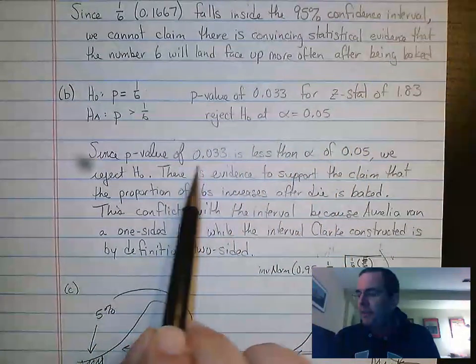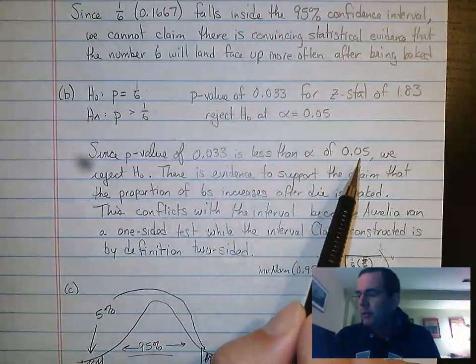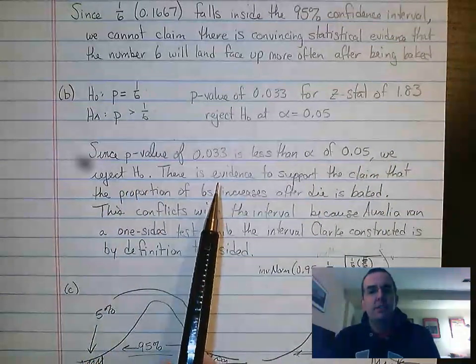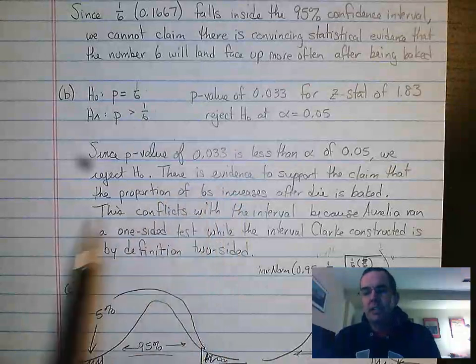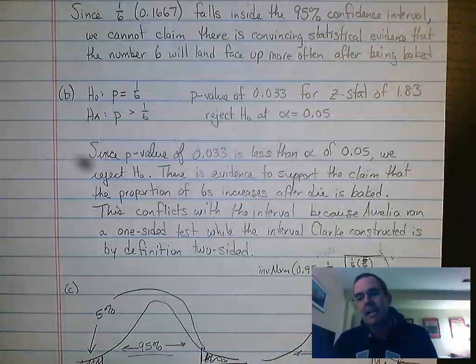In this case, since the p-value of 0.033 is less than alpha of 0.05, we would reject the null hypothesis. There's evidence to support the claim that the proportion of sixes has changed and actually has increased, so that this die may not be fair anymore.